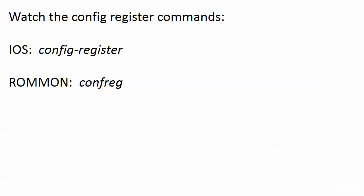Before we start working with the config register, you'll be working with it in the IOS and in ROM-on if you're doing a password recovery, but the commands are a little bit different. On the IOS, use the config-register command. When you're in ROM monitor mode, just use confreg, followed by the config register value that you want. When we come back, we're going to change the config register a couple times and see its effect on router 3.